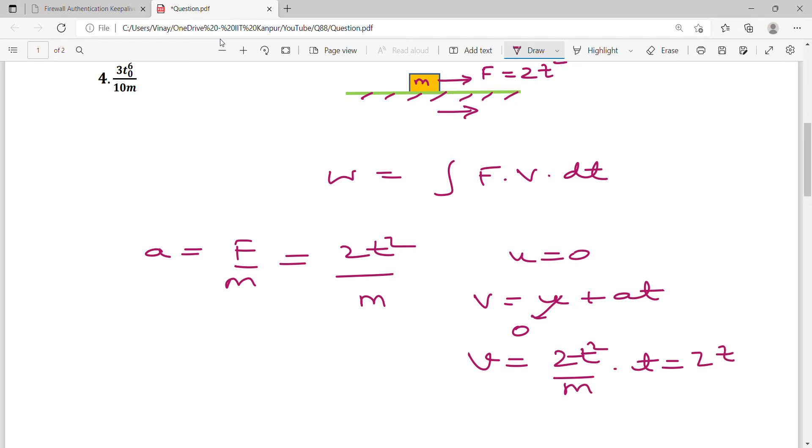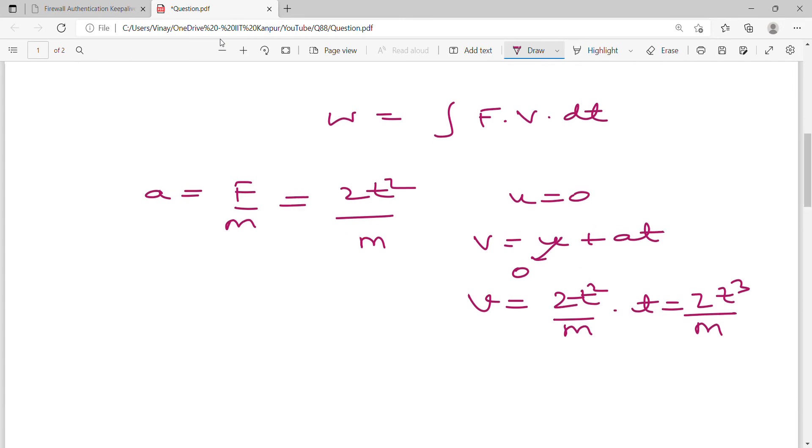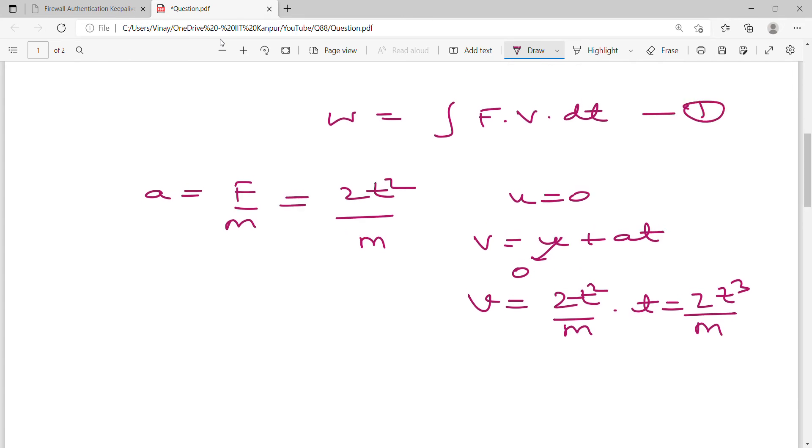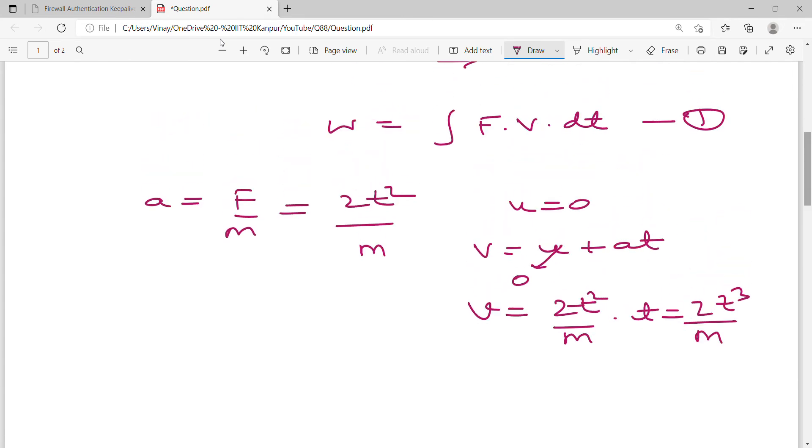That means 2t³ upon M. Am I right? Yes. So you have velocity. Now let's call it equation 1. And equation 1 you keep in mind.